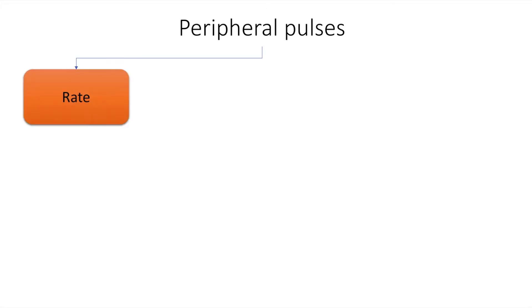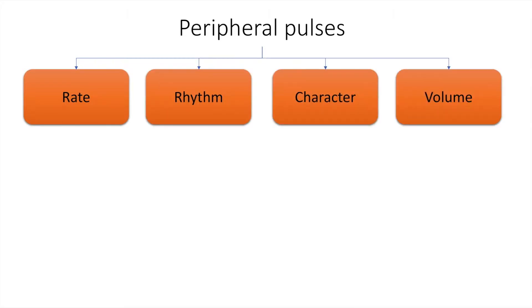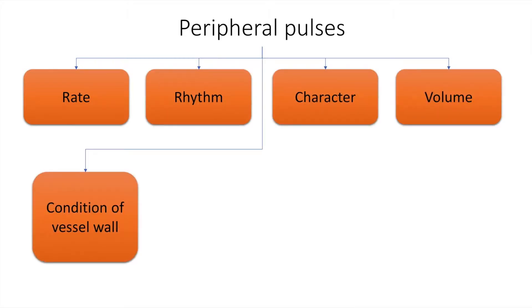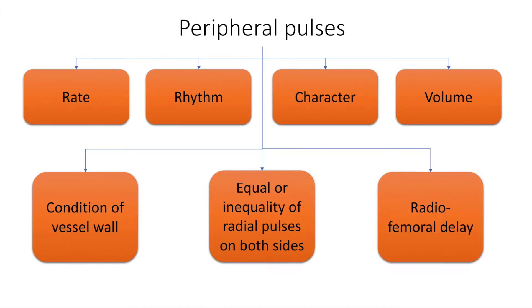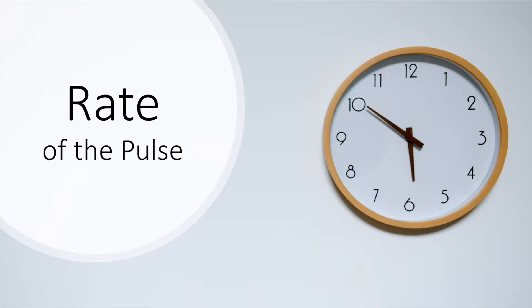The peripheral pulses can be studied under the following headings: the rate, rhythm, character, volume, condition of the vessel wall, equality or unequality of radial pulses on both sides, and a radio-femoral delay.